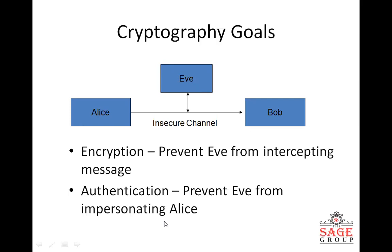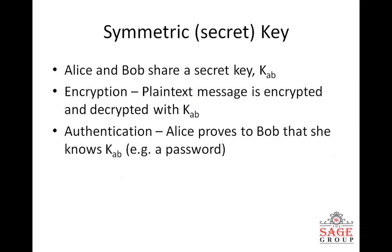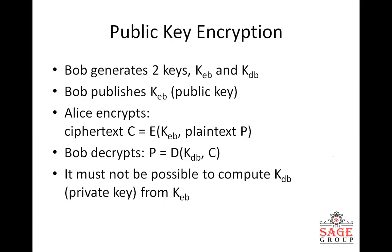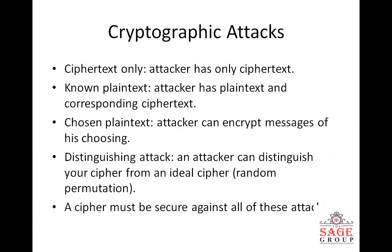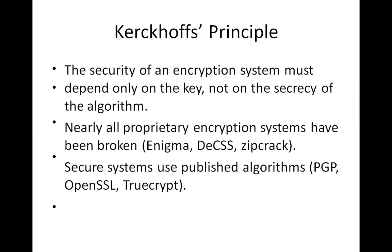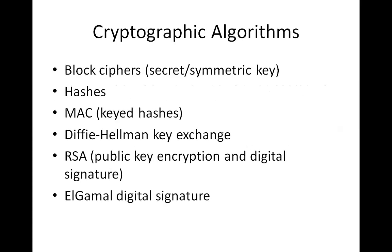Authentication prevents Eve from impersonating Alice. There are different kinds of techniques including symmetric key encryption, public key encryption, digital signatures, and various combinations. We will also cover various kinds of cryptographic attacks, Kerckhoffs's principles, provable security, and cryptographic algorithms in the next lecture.